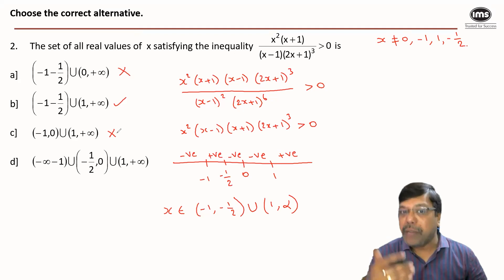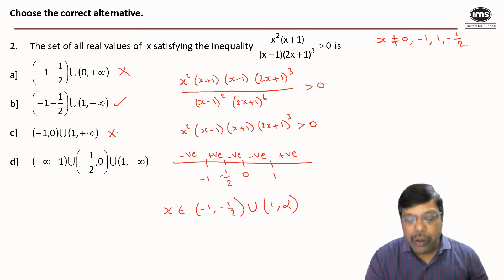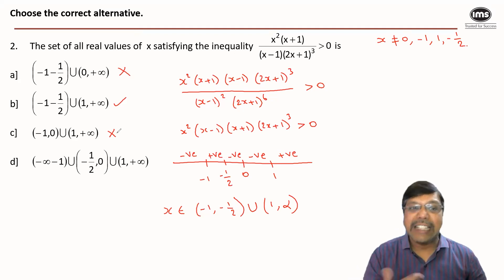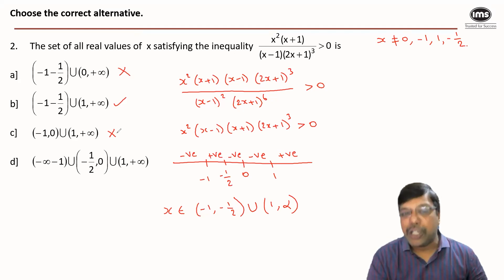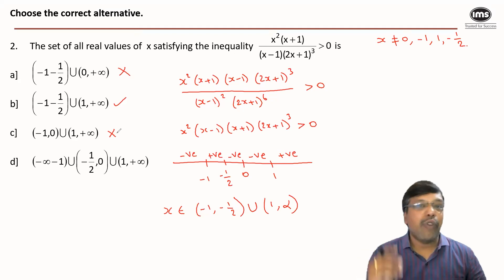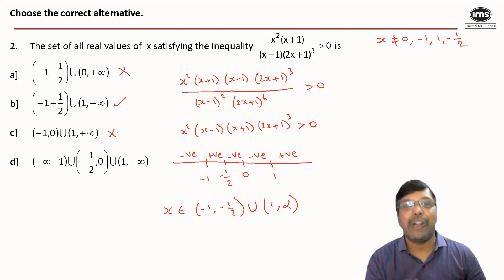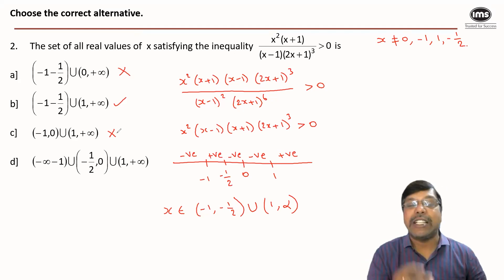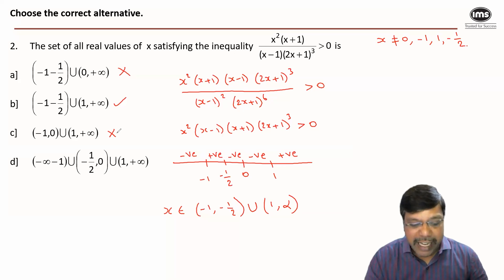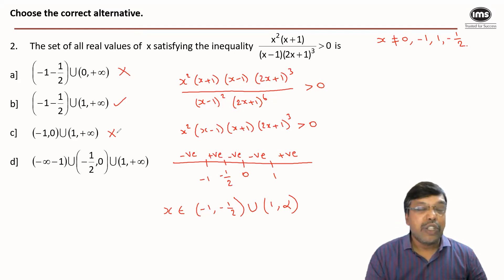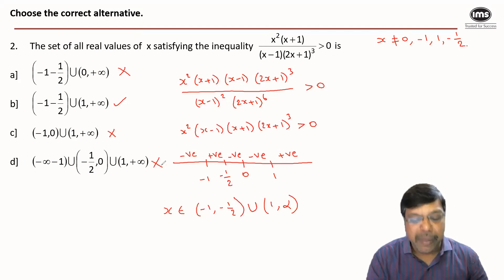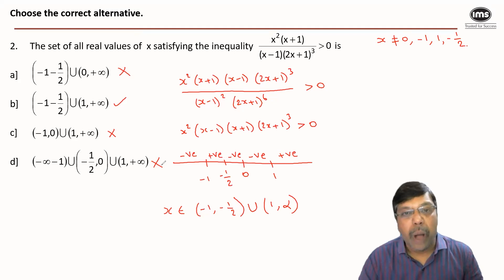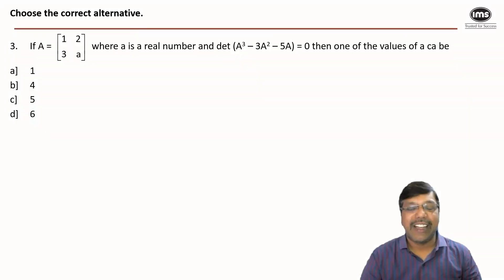I'm left with options B and D. To eliminate one, I substitute x = -2, a value only satisfied by option D. Since the expression is clearly negative at x = -2, x should not include -2. Thereby option D is eliminated, leaving B as the only available option, which must be the right answer.